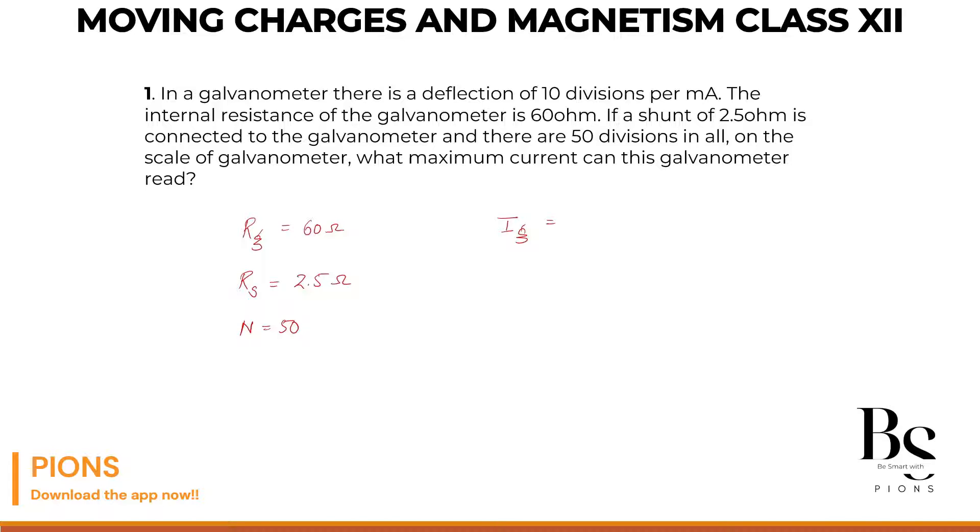So current which is required for full scale division will be IG, that will be 50 divisions divided by 10. That will give you 50 divided by 10 milliamps, that will be our current through the galvanometer for full scale division. Let me repeat again, for full scale division, the total divisions divided by 10 division per milliamps, so that milliamps goes in the numerator. So 50 by 10, which is 5 milliamps, that is the current in full scale division.